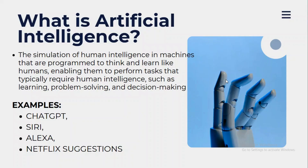In today's world, you are all aware of what artificial intelligence is. In real life we see examples like ChatGPT, Siri, Alexa, and Gemini from Google. Even Netflix suggestions are based on AI, because they internally use artificial intelligence and machine learning to show recommendations to the user. In simple terms, if a machine can think like a human, we can call that machine artificial intelligence.